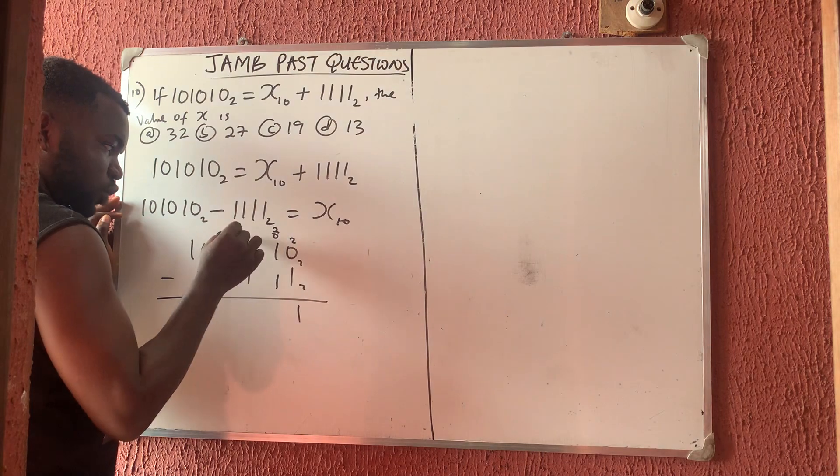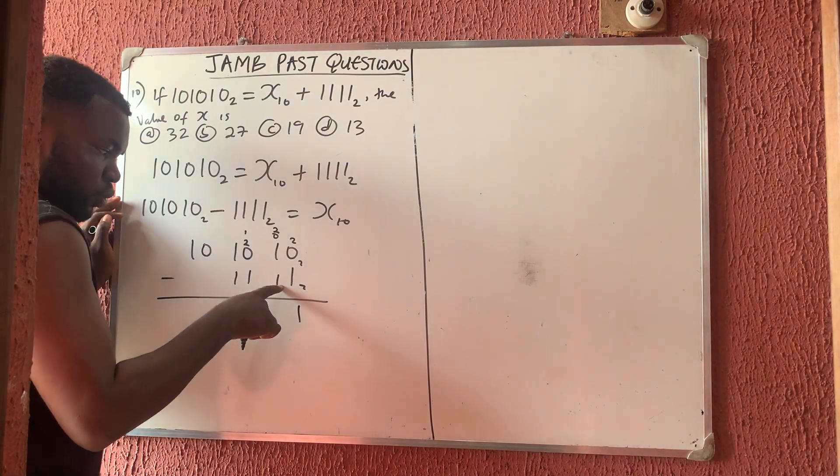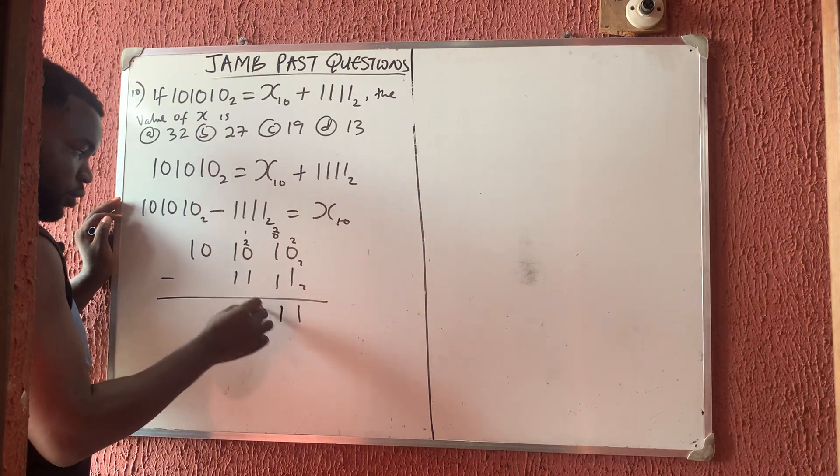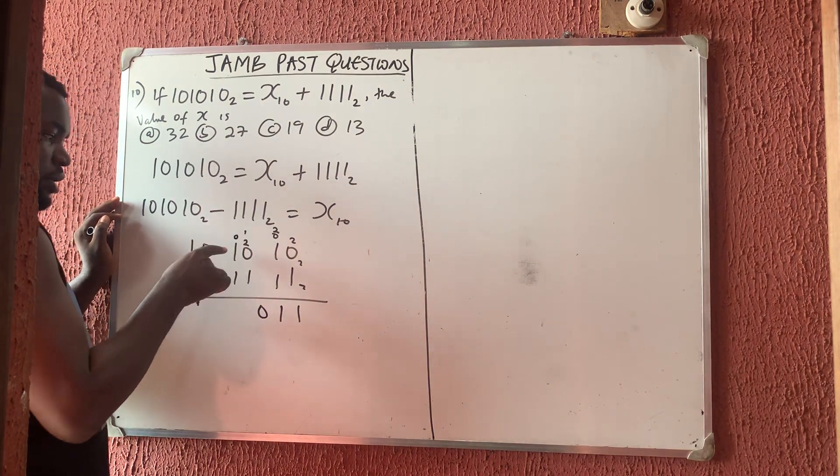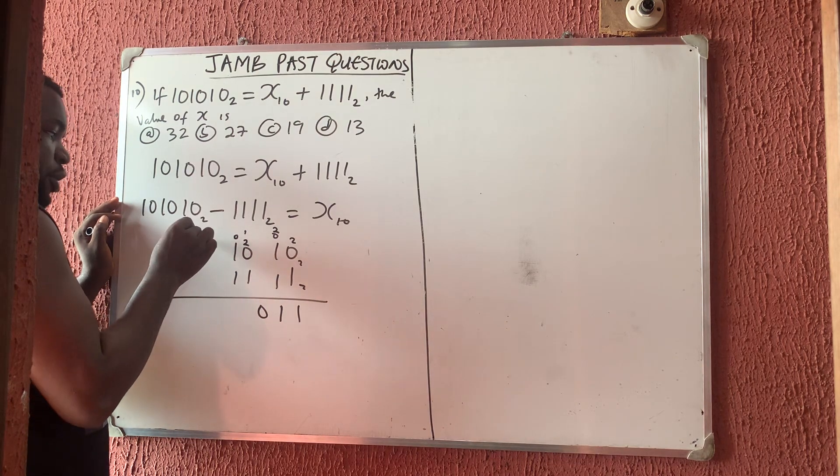Then 1 that is many here minus 1 is 0. Don't forget I borrowed here, so here was 0. This minus this cannot go. I borrow from here, call it 2, put it here. Borrow one from that 2, here is many 1, call it 2, put it here. 2 minus 1 now is 1.